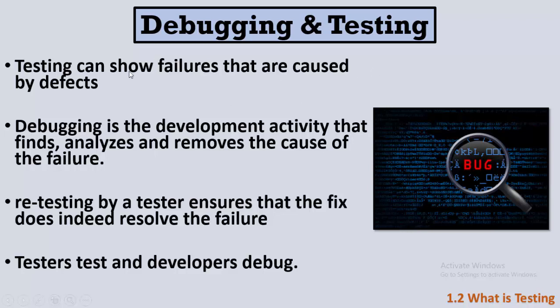Testing shows failures that are caused by defects — the developer made mistakes and I detected them as bugs or failures. When I hand this bug report to the developer, they perform debugging. Debugging is a development activity — it is not the tester's job. Debugging is the development activity that finds, analyzes, and removes the cause of the failure.